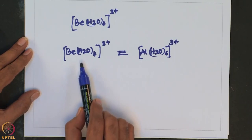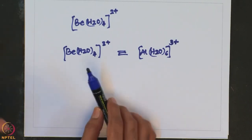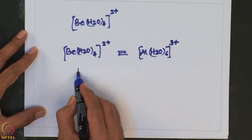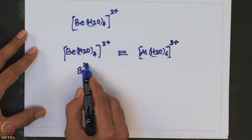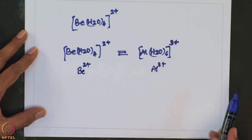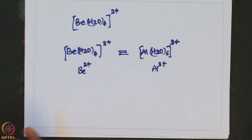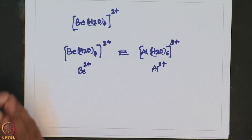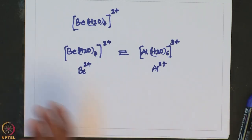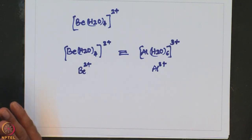The tetra-aqua beryllium cation is acidic as a result of the high polarizing power of the small Be2+ ion, similar to the hexa-aqua aluminum 3+ cation which also undergoes hydrolysis. The other hydrated group 2 cations are not acidic owing to their low charge-to-size ratio or charge density. Thus, except for beryllium, other alkaline earth metal compounds do not show amphoteric properties.